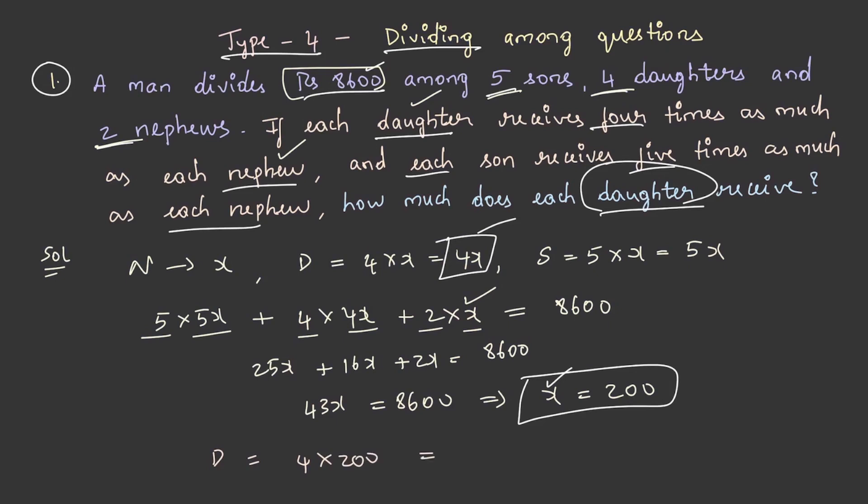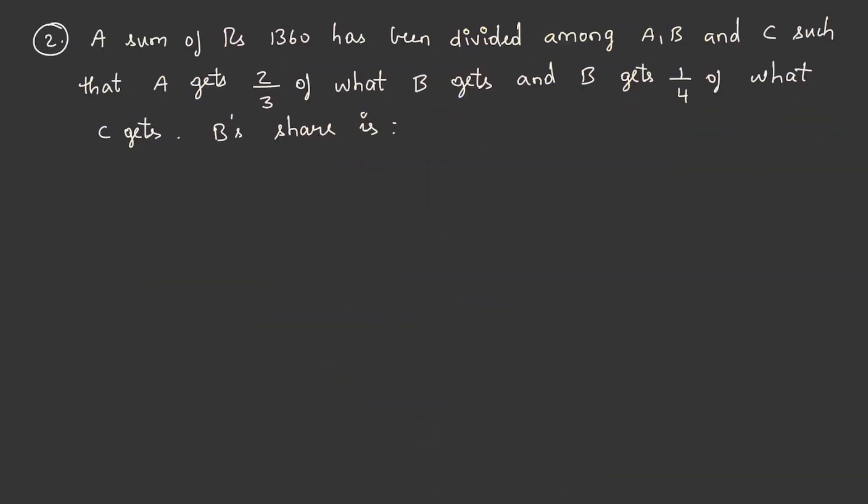So each daughter will receive rupees 800. Let's solve another question: a sum of rupees 1360 has been divided among A, B and C such that A gets 2 by 3 of what B gets and B gets 1 by 4 of what C gets. Let's find out B share.